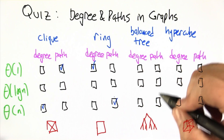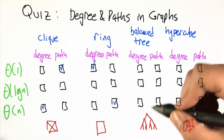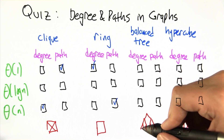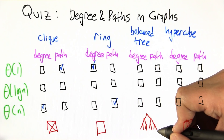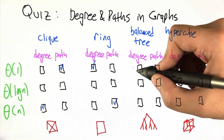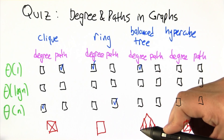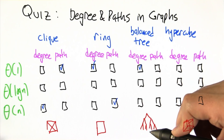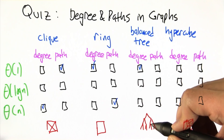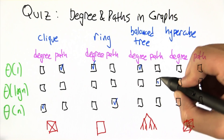Balanced trees are really interesting. In a balanced binary tree, a node might have a parent and 2 children. The root node has degree 2, and all the leaves have degree 1, so it's never more than 3 regardless of how many nodes are in the graph — the degree is constant. For path length, any node can reach any other by going up to the root and back down. Getting to the root takes logarithmically many steps, and going back down also takes logarithmically many steps, so it's about 2 log n — a pretty short path for a big graph.